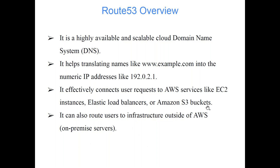Every EC2 instance has a unique IP address. But if you're hosting a website on it, you'd like to give a meaningful name to your website, and that meaningful name needs to be linked with the IP address of the EC2 instance — that part will be taken care of by the Route 53 service. It can also route users to infrastructure outside of AWS — not only AWS services, but even on-premise servers.